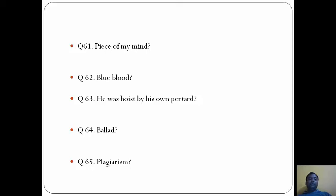Blue blood refers to belonging to a person of noble class, that is aristocracy. So the option here will be C. He was hoist by his own petard - this means he had problems as a result of his own plans to hurt others, that is A.